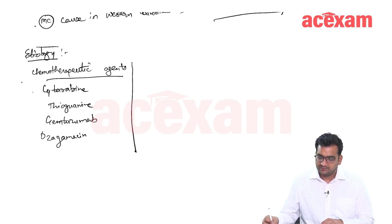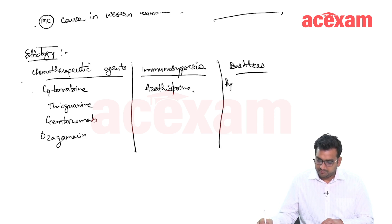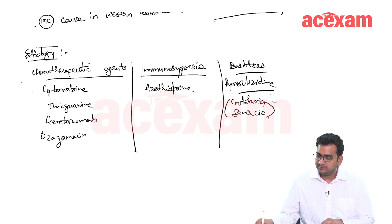These are the chemotherapeutic agents which are responsible for Veno-Occlusive Disease. Immunosuppression like azathioprine, bush teas or pyrrolizidine, crotalaria and senecio are the compounds in the bush tea which are responsible for VOD.